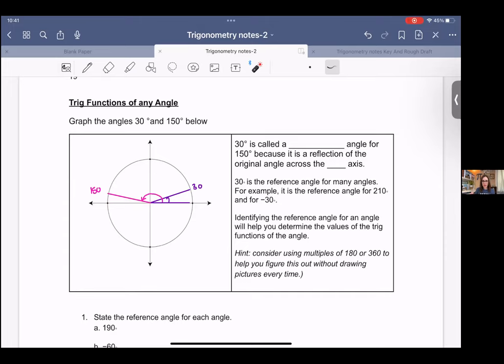These are called reference angles. Basically they're forming the same angle with the axis here. And so 150 degrees is a reflection across the y-axis.